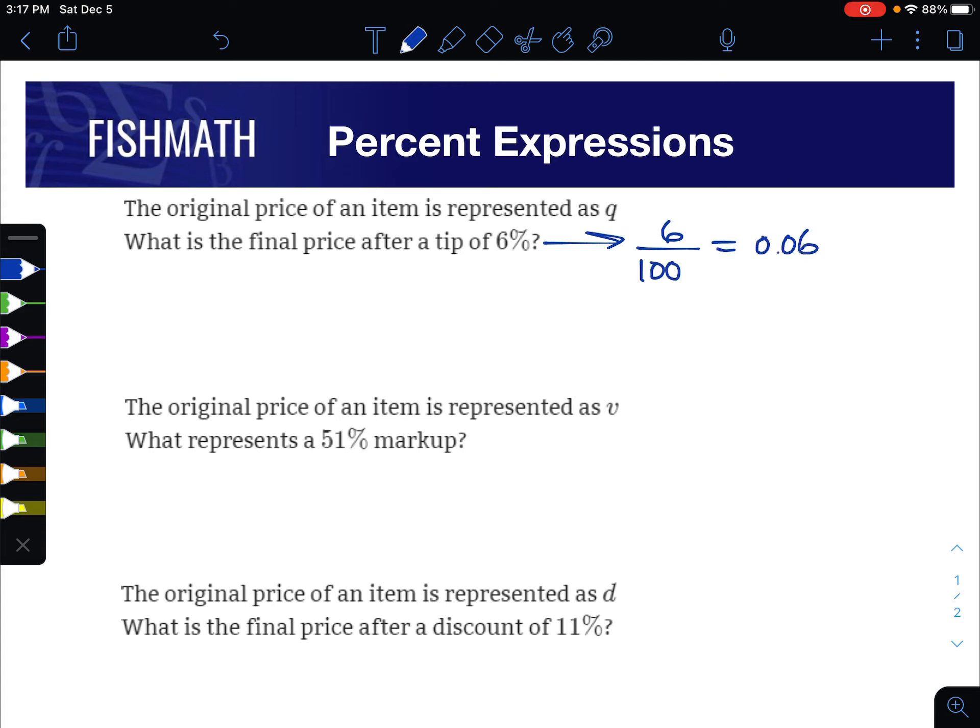If you divide these, it would be 0.06, so the tip would be 0.06 times our original price q. It wants the final price, so we're going to add that on because tips are added on to the original price. So it's going to be q plus 0.06q, and that would be the total final price. Remember, q is just one q.